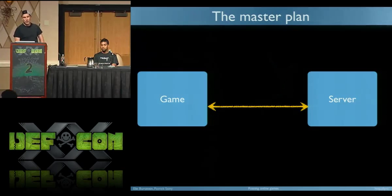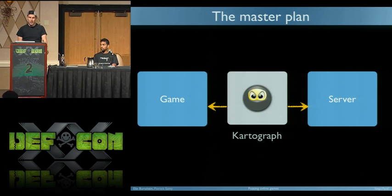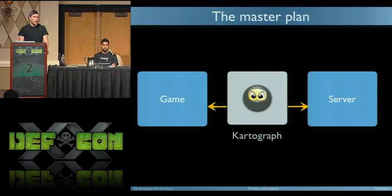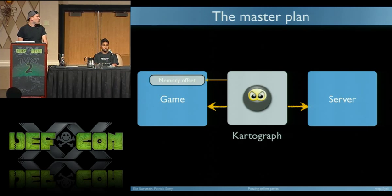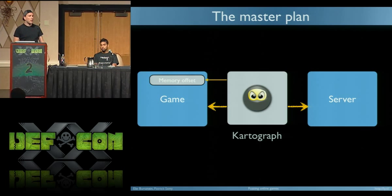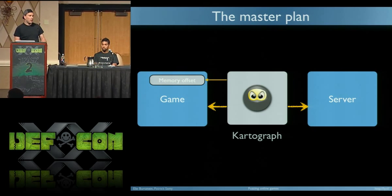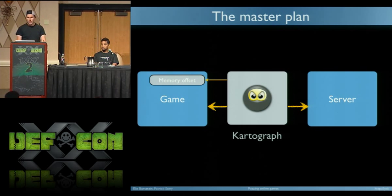Here's our master plan for today. We have the game and we have the server. What we try to do is be in between — we want our tool to intercept the traffic and see the packets. Our first twist is we also want our tool to correlate that with memory offsets. Combining network traffic with memory analysis is very powerful because you know what packet affects which state — for instance, if I see this packet, which memory value changes.